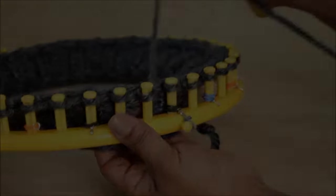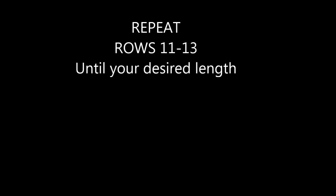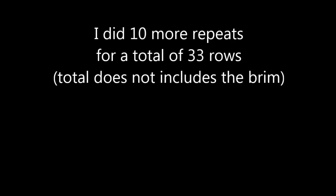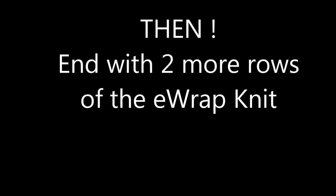When you're done with row 13, now all you're going to do is repeat rows 11 through 13 for your desired length. In my case, I did ten more repeats for a total of 33 rows. This does not include the brim. And then to end, I did two more rows of the e-wrap knit stitch.